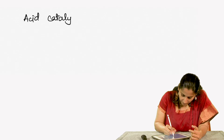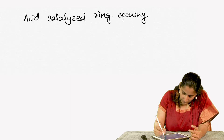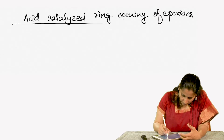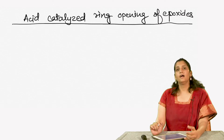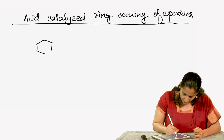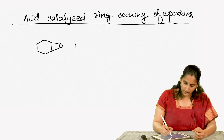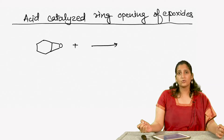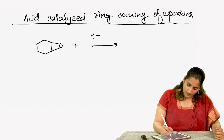If we have to talk about reactions of epoxides, one of the key reactions is the ring opening reaction. Let us look at the first reaction of epoxide wherein we talk about acid catalyzed ring opening. We are going to take an epoxide and put it in dilute acid, something like H3O+.